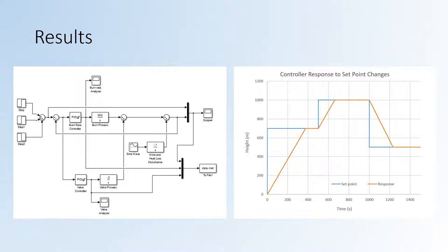It was able to descend, which we also wanted. In our disturbances, we modeled them with a sine wave. We lumped them all together with the heat losses because we decided the wind was going to also descend the balloon.